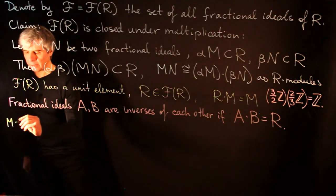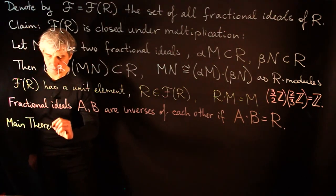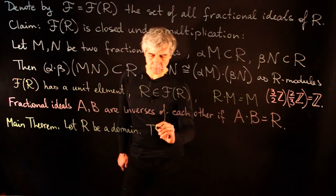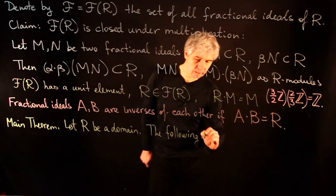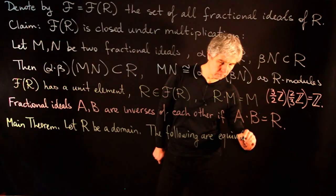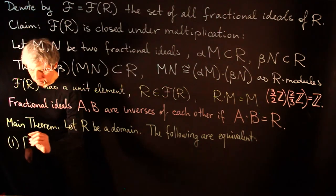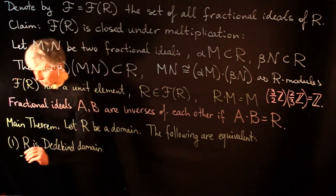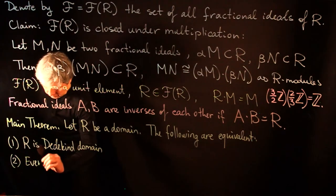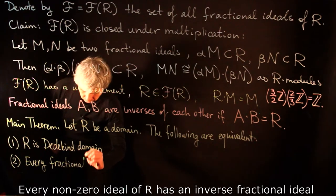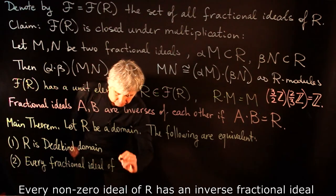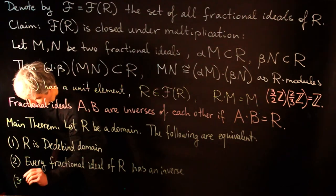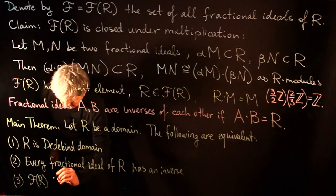Now we state the main theorem of this lecture. Let R be a domain. The following conditions are equivalent: one, R is a Dedekind domain; two, every fractional ideal of R has an inverse; three, F(R) is a multiplicative group.